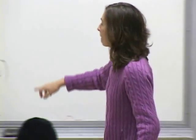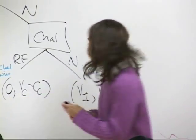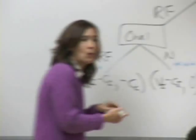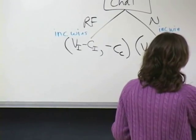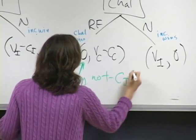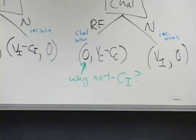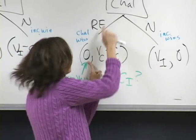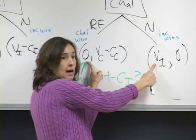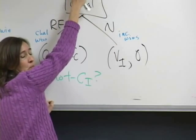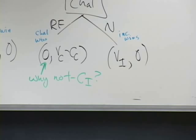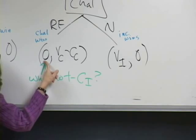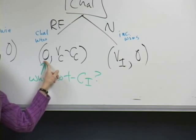Why isn't the incumbent's payoff negative CI on the branch where the incumbent doesn't raise funds? Because the incumbent is not raising funds on that branch. On both nodes associated with that side of the tree, the incumbent does not pay the cost of fundraising precisely because she decided not to do that. And there's no VI there because the incumbent doesn't win on that path.